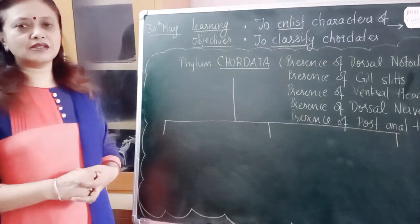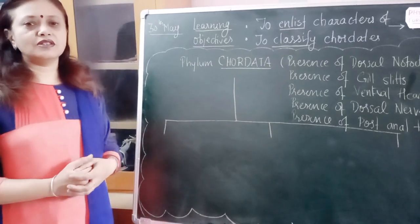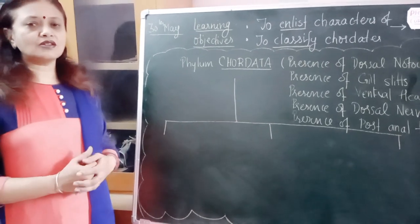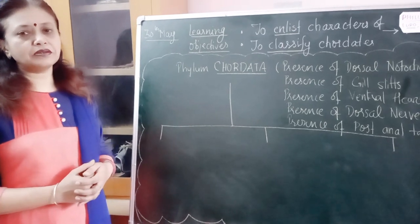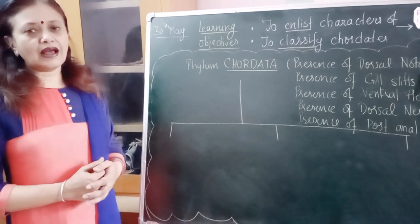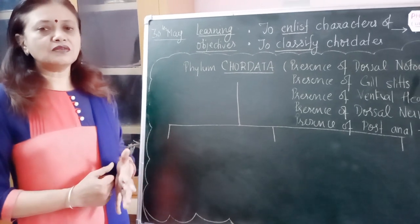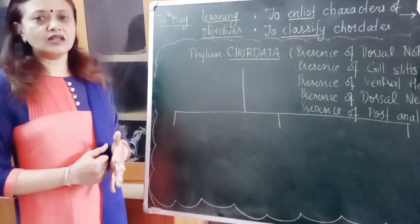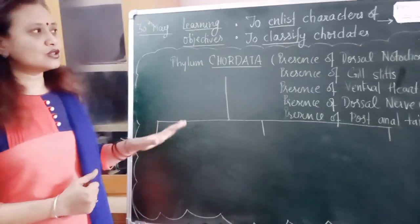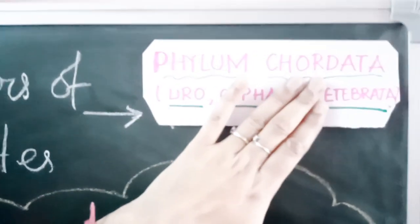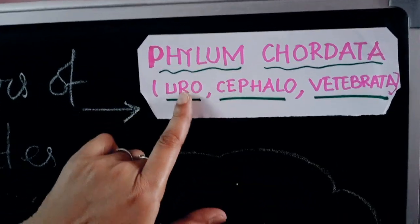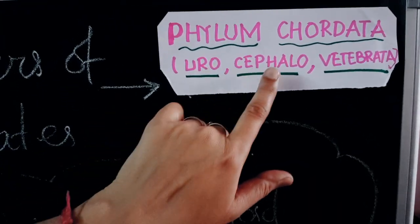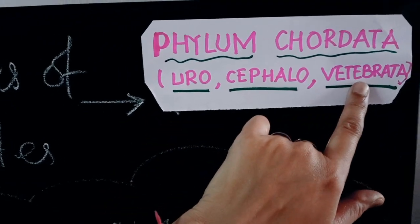Good morning students, welcome to our biology classroom. Today we will start and try to understand the last phylum of this animal kingdom, that is Phylum Chordata. As the name is indicating, this phylum is marked by the presence of a structure called the notochord. In Phylum Chordata we have got three subphylums: Urochordata, Cephalochordata, and Vertebrata.